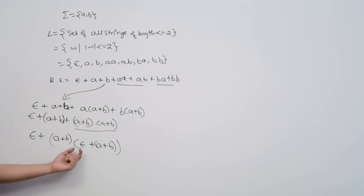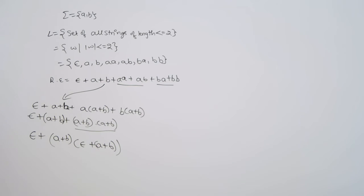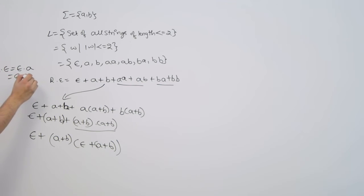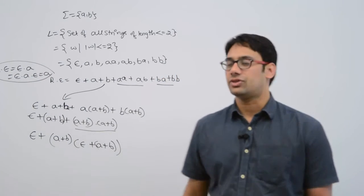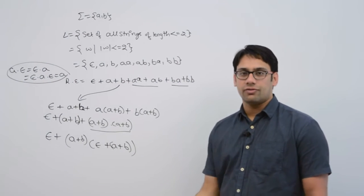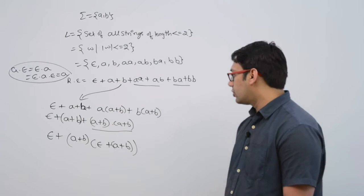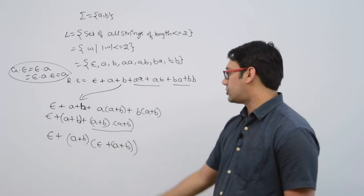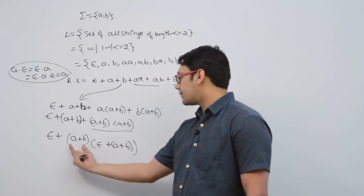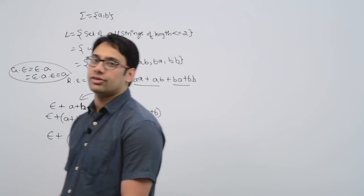If you concatenate any string with epsilon you get the same string — for example, a·ε = ε·a = ε·a·ε = a itself. So epsilon does not make any change; it is a string of length 0. If you open those brackets, (a+b) concatenated with epsilon still gives (a+b), and the two (a+b) parts concatenated give strings of length 2.